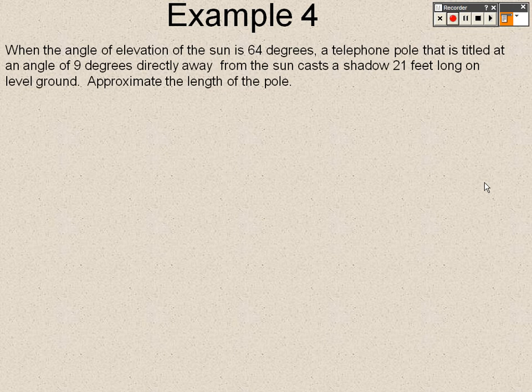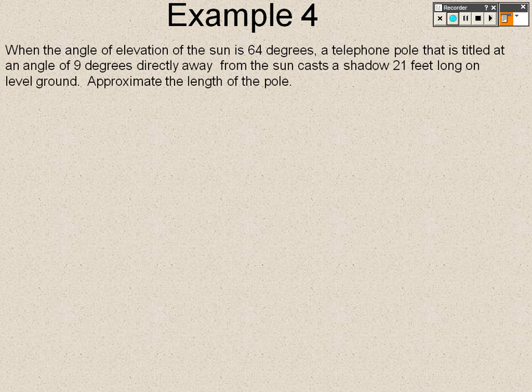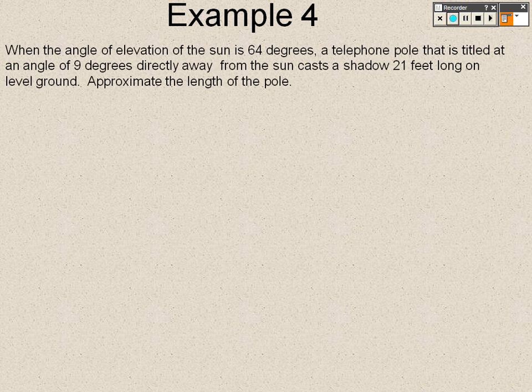So in example 4, when the angle of elevation of the sun is 64 degrees and a telephone pole that is tilted at an angle of 9 degrees directly away from the sun casts a shadow of 21 feet on level ground approximately the length of the pole. So what I'm going to do is I'm going to stop this video right there for now. When we come back, we can dive right into this problem.